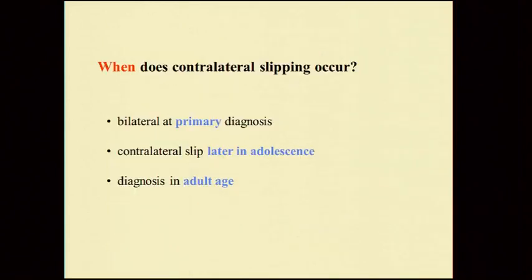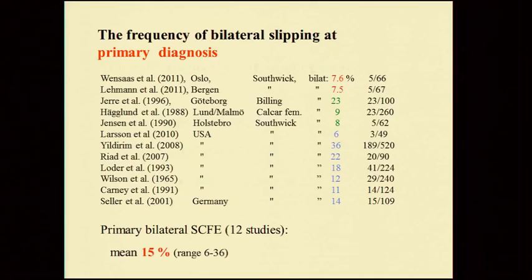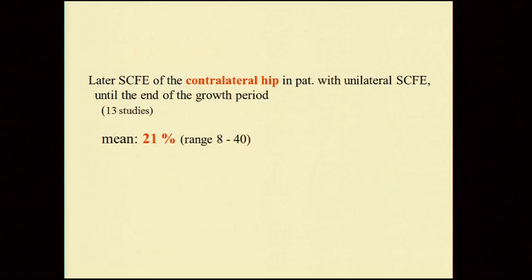When does contralateral slipping occur? It can occur at the primary diagnosis, later in adolescence, or in adult age. The frequency of bilateral slipping at primary diagnosis varies from 6 to 36 percent, with a mean of 15 percent. Later slipped epiphysis of the contralateral hip in patients with unilateral disease, until the end of the growth period, varied from 8 to 40 percent across 13 studies, with a mean of 21 percent.